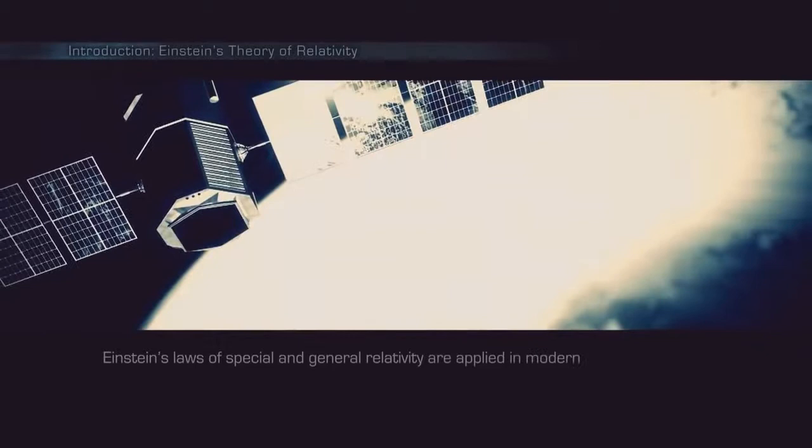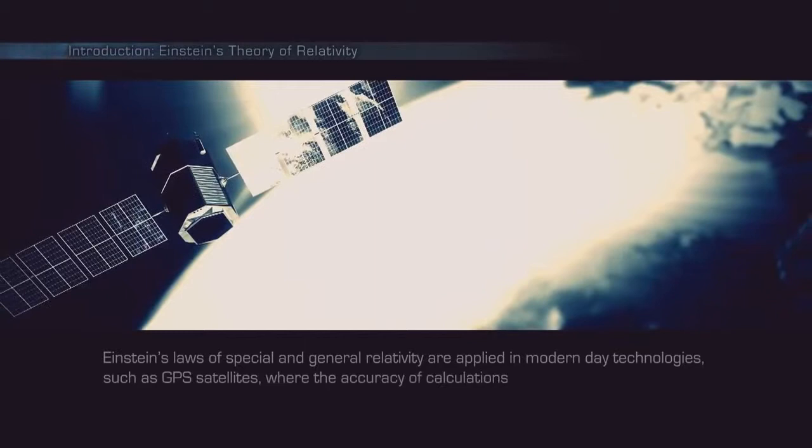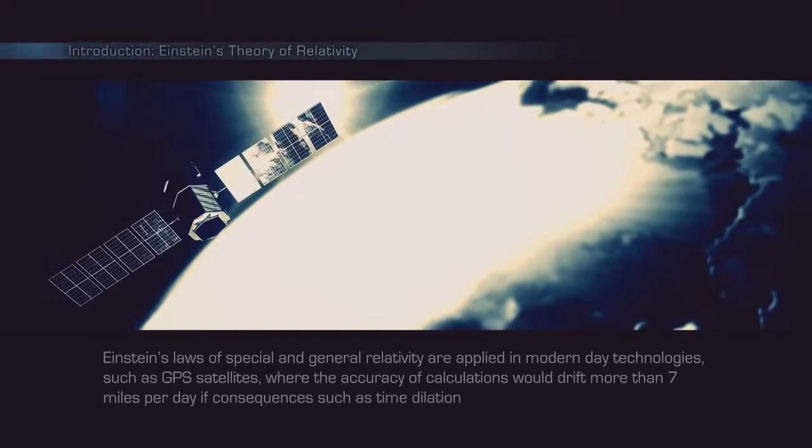Einstein's laws of special and general relativity are applied in modern-day technologies, such as GPS satellites, where the accuracy of calculations would drift more than 7 miles a day if consequences such as time dilation would not be taken into account.